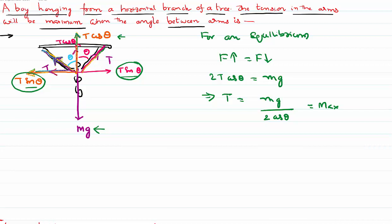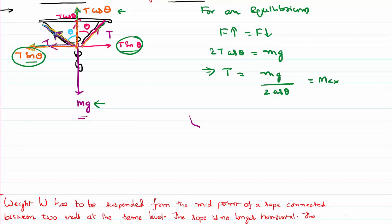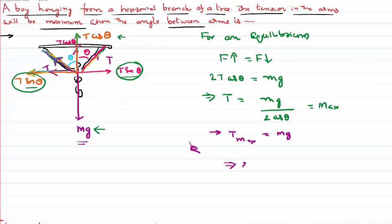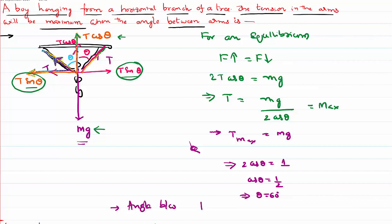For this tension T to be maximum, from the equation T = mg/(2 cosθ), T_max equals mg when 2 cosθ equals 1, meaning cosθ = 1/2, so θ = 60°. Since θ is the angle each hand makes with the vertical, the total angle between the two hands is 2θ = 120 degrees. That is the answer.